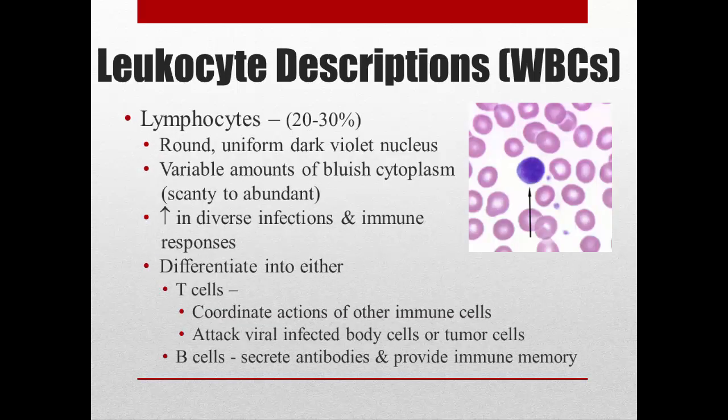Lymphocytes are the smallest of the white blood cells and are agranulocytes. They have a large blue nucleus and blue cytoplasm — in fact, the nucleus takes up so much room there's barely any cytoplasm left. They increase dramatically in infections or immune responses, and we'll spend a lot of time with them in the immune system. They differentiate into T-cells, which coordinate actions of other immune cells or attack virally infected or tumor cells, and B-cells, which make antibodies and provide immune memory, so you have a quicker response if infected with the same antigen again.